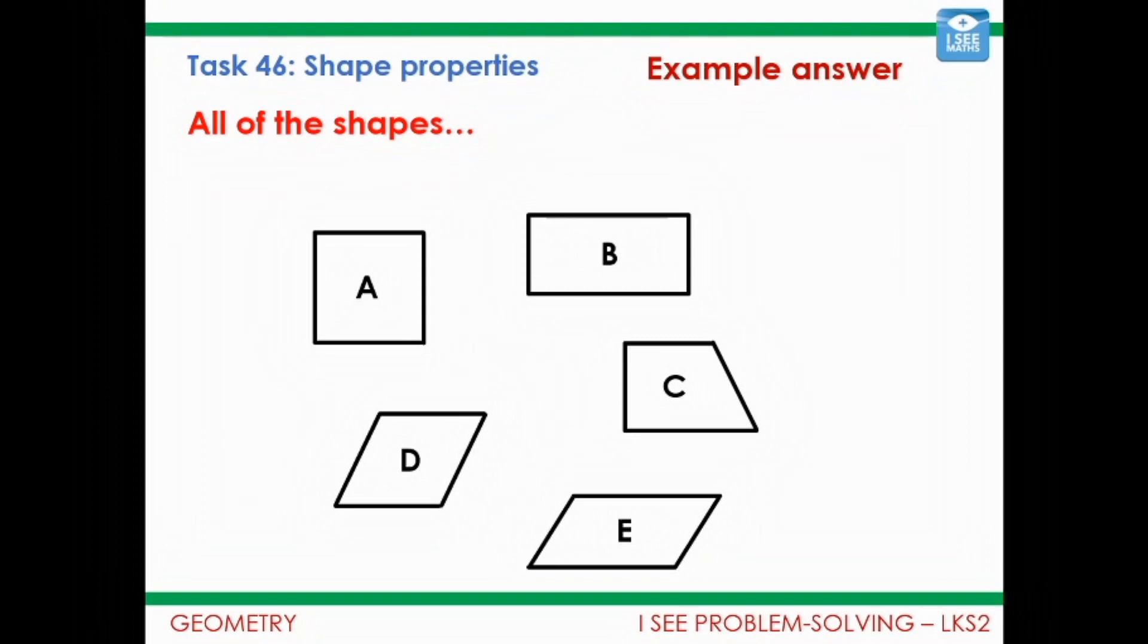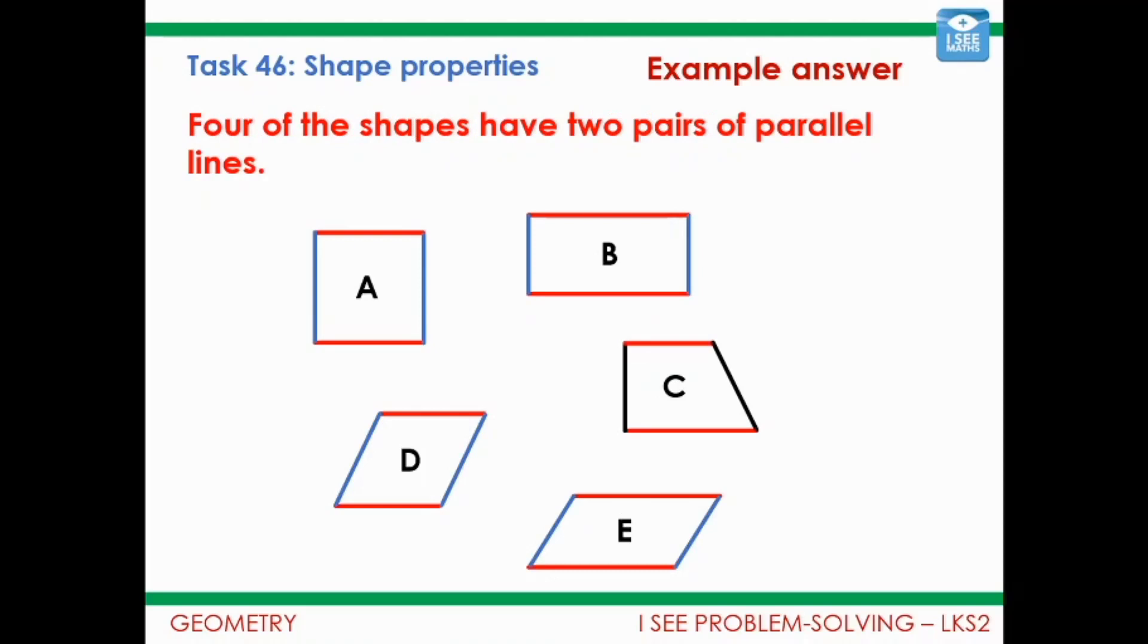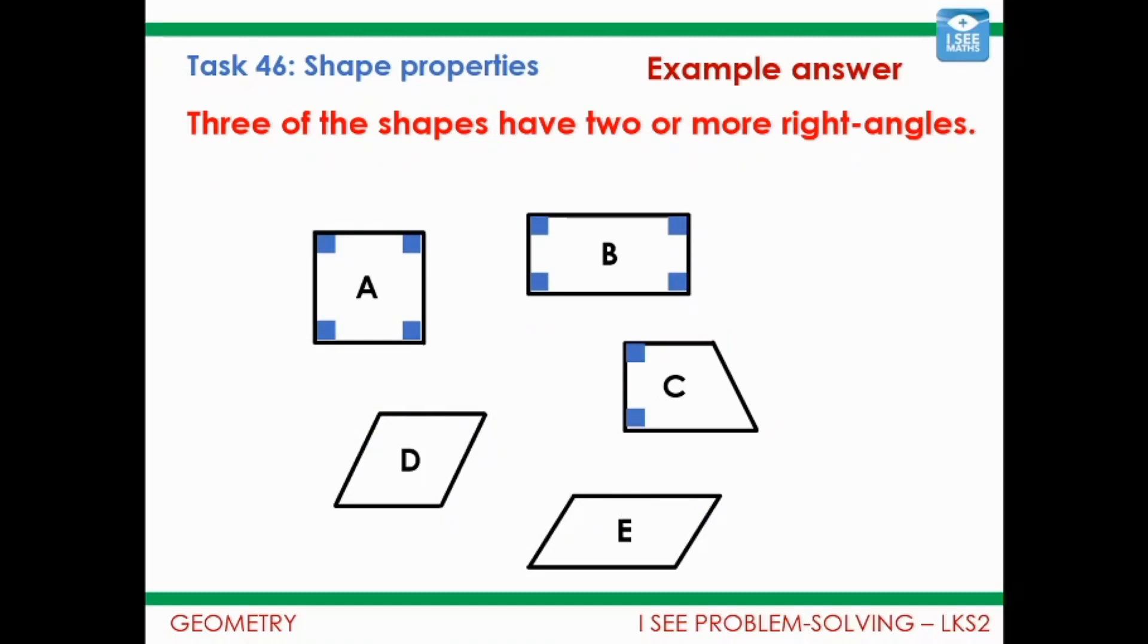So let's have a look at some possible answers. Of course not the only possible answers but just some possible answers. Well all of the shapes are quadrilaterals. They've all got four sides. Four of the shapes? Four of the shapes have two pairs of parallel lines. I've marked on the parallel lines. And of course C only has one pair of parallel lines there. Three of the shapes? Well three of the shapes have two or more right angles. I've marked the right angles on there.